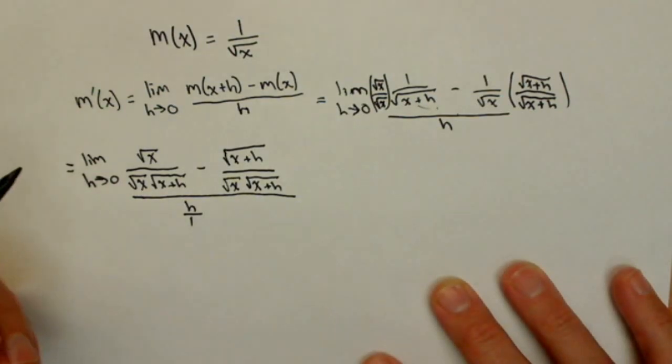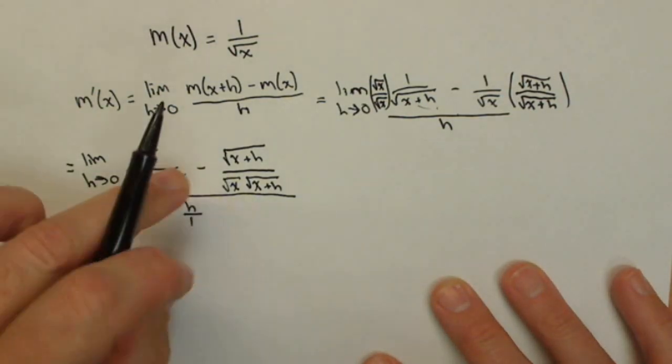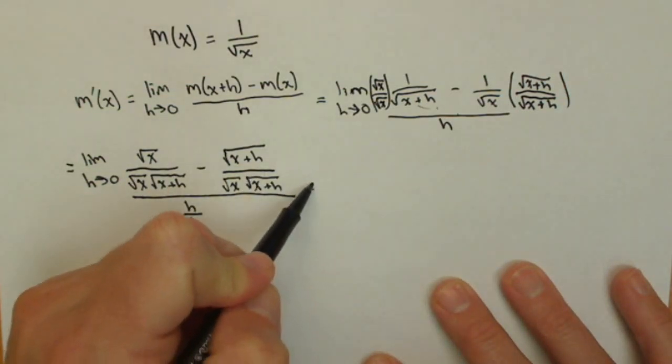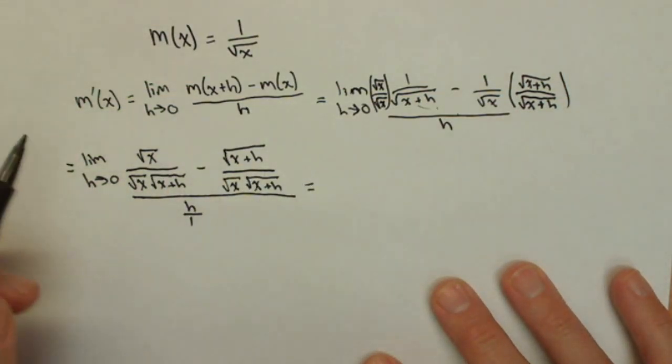So, I'm going to write over 1 because in the next step, I'm going to start multiplying by the, dividing by a fraction, we multiply by the reciprocal. I'm going to start multiplying by 1 over h just so I don't have this huge double fraction.